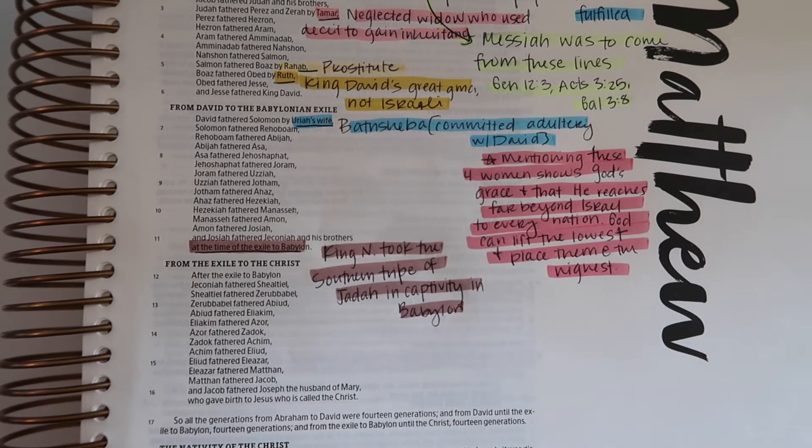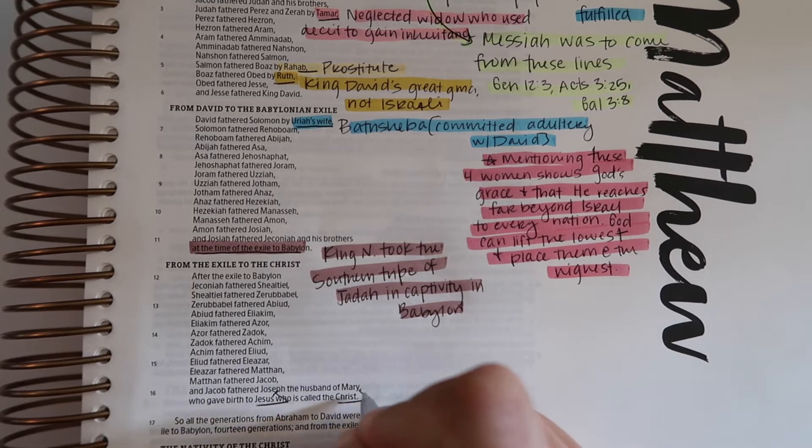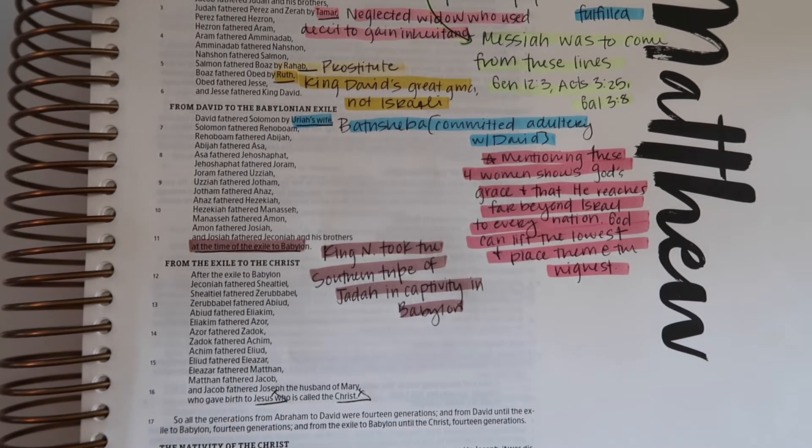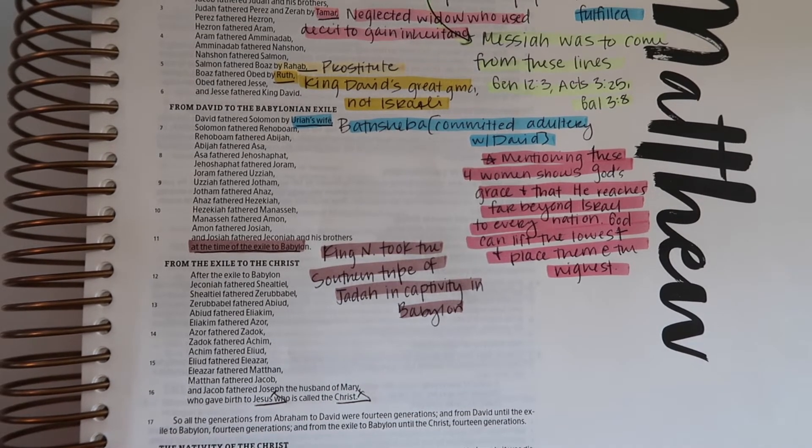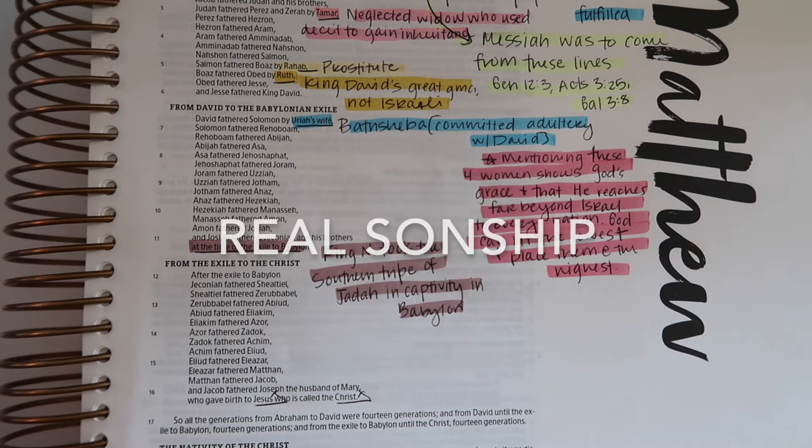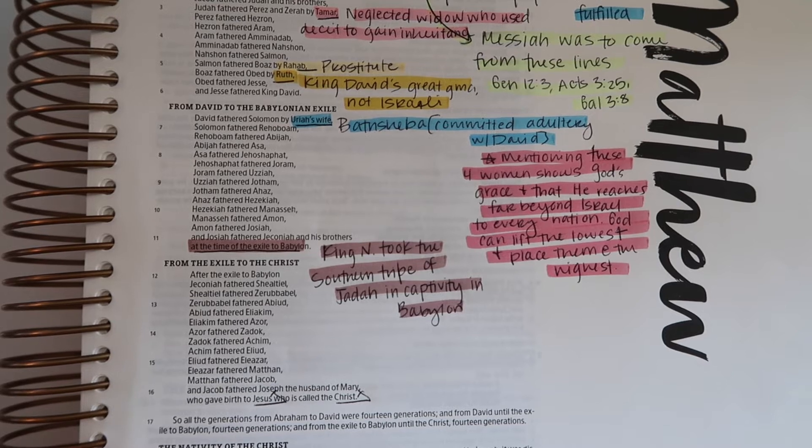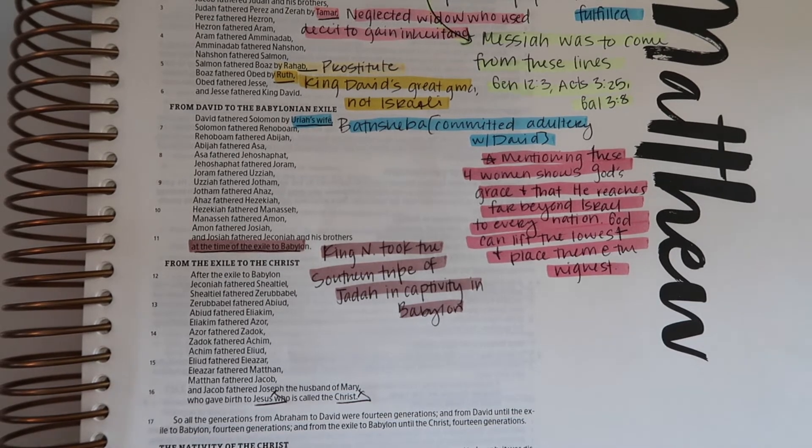Then we're gonna go all the way down here - Jacob fathered Joseph the husband of Mary who gave birth to Jesus who was called the Christ. I thought this was really really cool. Joseph obviously isn't Jesus's biological father, he's his adoptive father. The culture of this time considered adoption to be real sonship. Jesus had no biological relation to Joseph but he continued his family line.